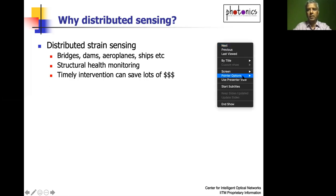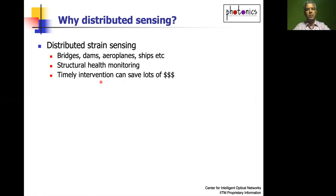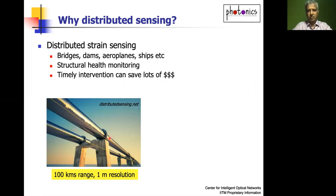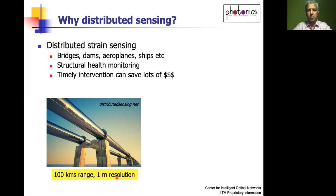In all these cases, timely intervention can save a lot of dollars. We need to be monitoring these structures and checking for any developing defects. One example shown here is an oil or gas pipeline on which you could run optical fibers to look for defects over ranges in the order of hundreds of kilometers with one meter resolution. There are already commercial Brillouin distributed sensors, specifically a technique called Brillouin optical time domain analysis, BOTDA, which is quite useful for these applications.